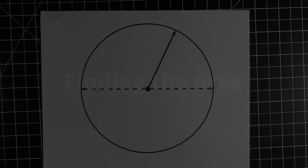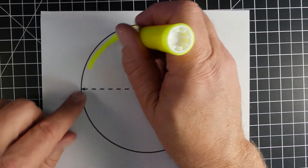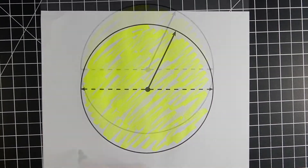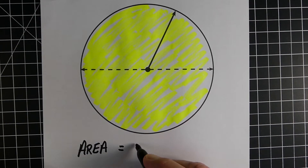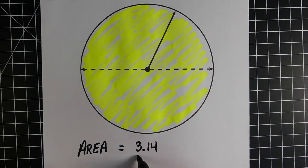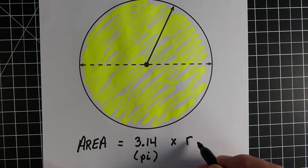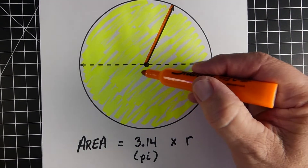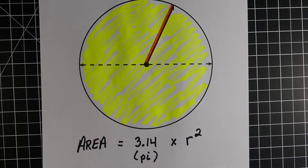Our next section is finding the area of a circle — everything that is inside of the circle, like the shaded area shown here. The formula we use is pi, which is 3.14, times the radius squared. The radius is the distance halfway across the circle, from the center to the edge. So it's pi times the radius squared.